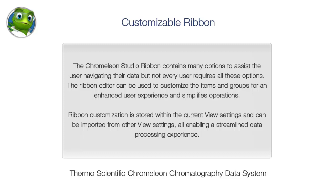The Chromelion Studio Ribbon contains many options to assist the user in navigating their data, but not every user requires all these options. The Ribbon Editor can be used to customize the items and groups for an enhanced user experience and simplifies operations. Ribbon customization is stored within the current view settings and can be imported from other view settings, all enabling a streamlined data processing experience.